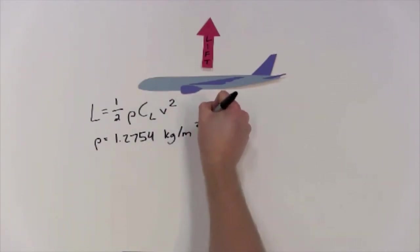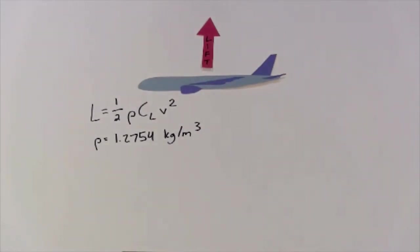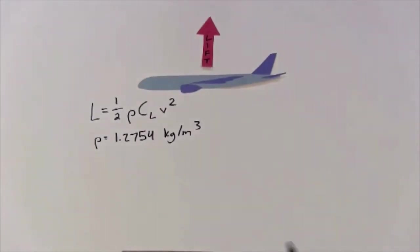If you want to simplify things, we generally use the standard density which is 1.2754 kilograms per meter cubed. V here is the speed of the aircraft, or how fast it's traveling. And C_L is something called the coefficient of lift.